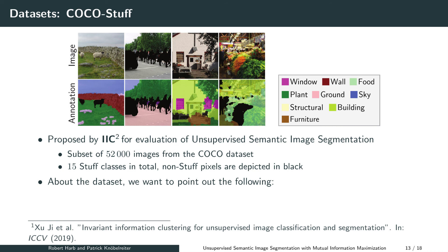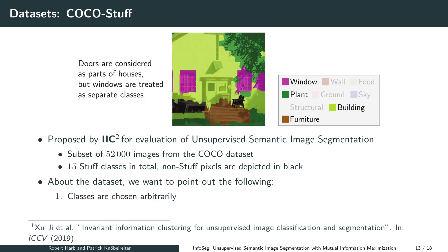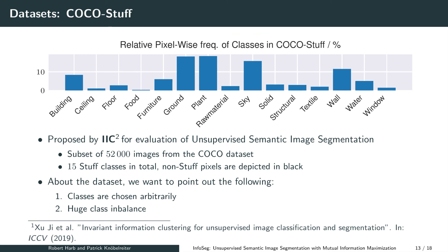Before presenting our results, we briefly review some of the datasets used for evaluation. The first dataset, COCO Stuff, is a subset of 52,000 images from the COCO dataset and contains 15 different Stuff classes. Some classes are chosen rather arbitrarily — for example, doors are labeled with the building class but a separate class is used for windows. This is an arbitrary choice that it is unfeasible to expect an unsupervised method to replicate. Moreover, the dataset has a huge class imbalance: while the majority of pixels are labeled as plant, sky, or ground, other classes are underrepresented. While supervised methods can counteract such imbalances, for example with inverse frequency scaling, this poses an additional challenge for unsupervised methods.